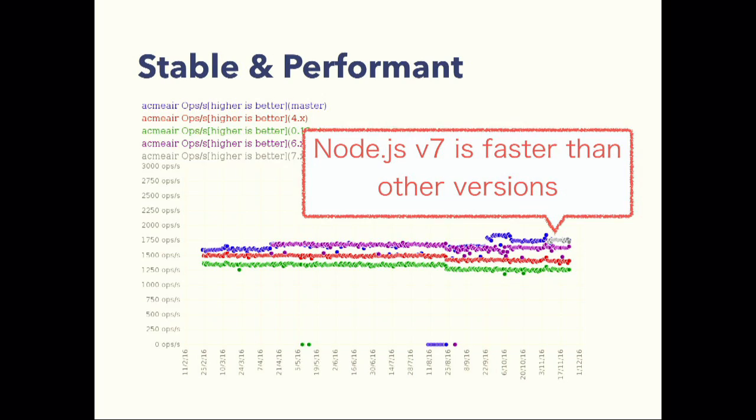This chart shows that Node.js v7.0 is faster than other versions. It's great — these improvements happen continuously every day.